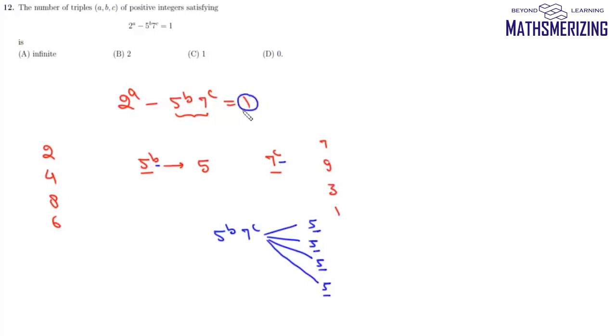And if you want this to be 1, then here we should have 6 and here we can have any values for B and C. So this A must be a multiple of 4, so we can write this as 2 to the power 4K minus 5 to the power B into 7 to the power C and this value must be 1.